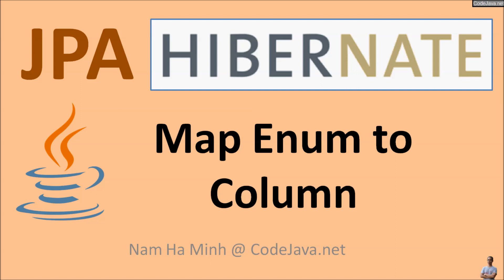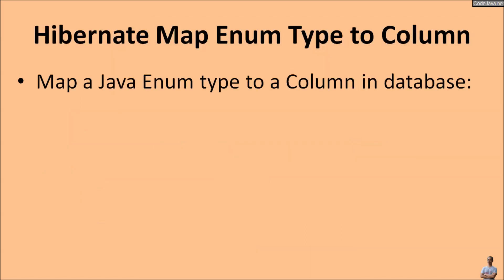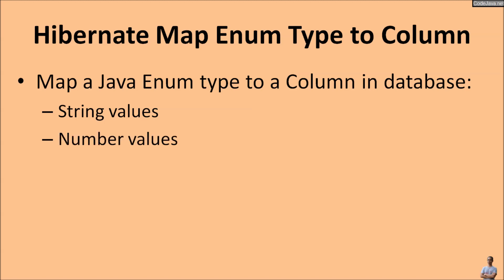In this video I will share with you how to map an enum type or enumeration type in Java to a column in a database with JPA and Hibernate framework. In detail, I will share how to map a Java enumeration type to a column in the database with two cases: in the first case the column stores character or string values, and in the second case the column stores number values.